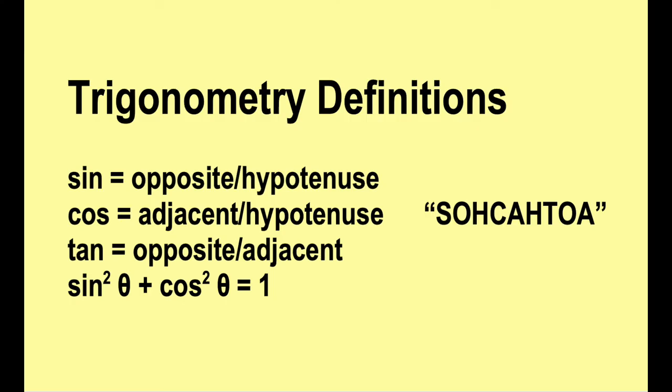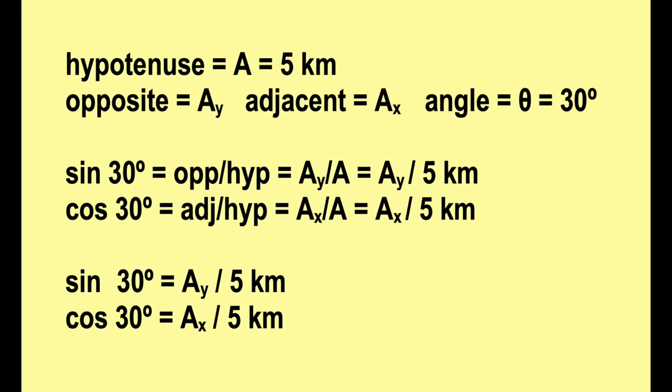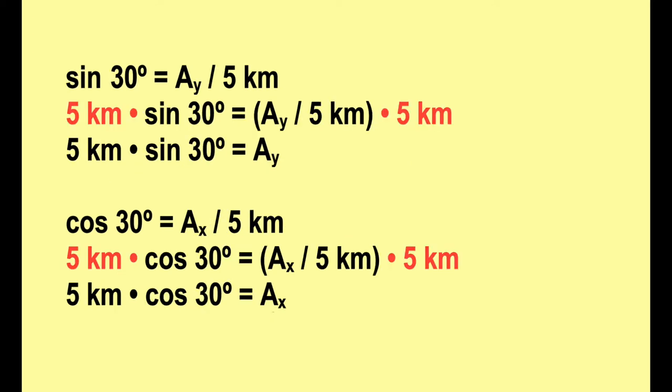Now back to these. We only need the first two lines right now. What we're going to do is fill these in with the values given in the problem. Here are the values, and when we plug things in, we get the last two lines. Our next step will be to multiply both sides of those last two lines by, in this case, five kilometers. Now we have expressions for AY and AX, and all we have to do is evaluate them.